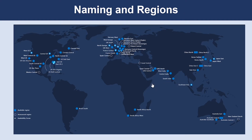All Azure resources have a name, which must be unique within a scope that may vary by resource type. All Azure resources are created in an Azure region and subscription. A resource can only be created in a virtual network that exists in the same region and subscription as the resource.